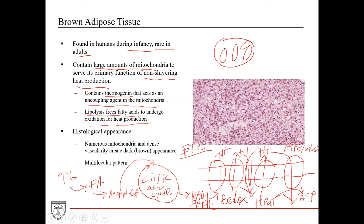Histologically, brown adipose tissue has a very different appearance from white adipose tissue. The numerous mitochondria and dense vascularity create a dark brown or strongly eosinophilic appearance. The nuclei are located more centrally, and it shows a multilocular pattern, versus the unilocular pattern of white adipose tissue.